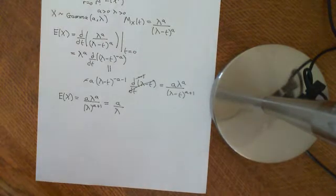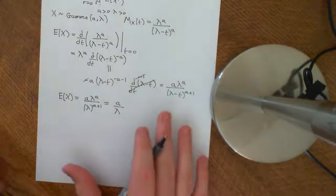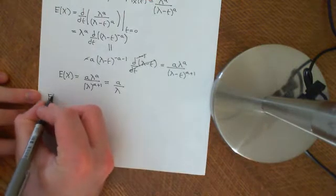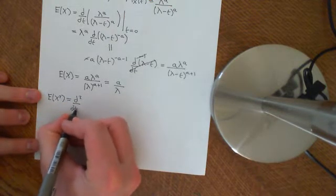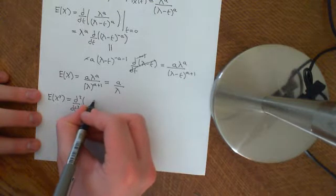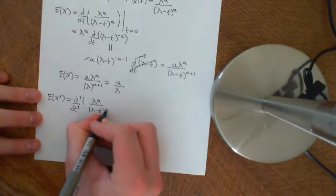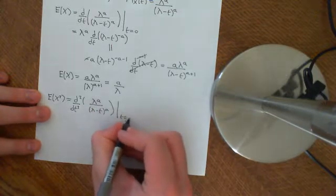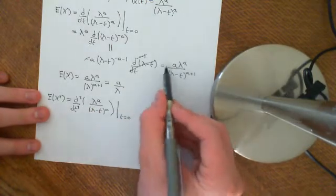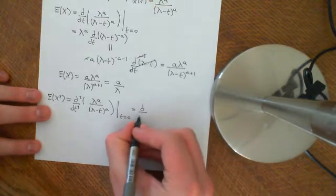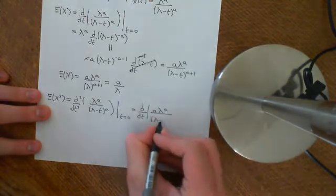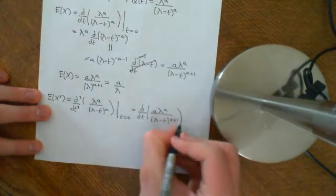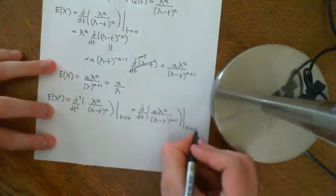So now let us continue on and find the second moment of the gamma distribution — the expected value of X squared. That's going to be the second derivative with respect to t of the moment generating function λ to the power of a over (λ minus t) to the power of a, evaluated at t equal to 0. We've already differentiated this once, so this now just becomes the derivative with respect to t of a λ to the a over (λ minus t) to the power of a plus 1, all evaluated at t equal to 0.